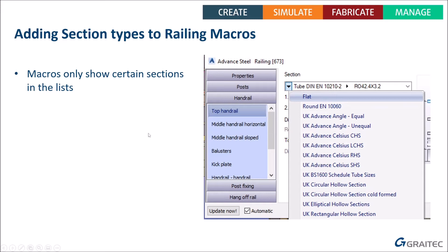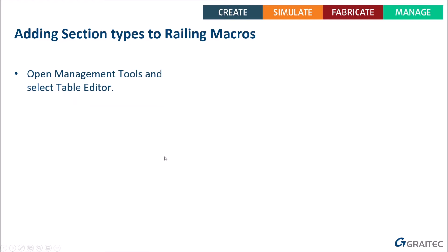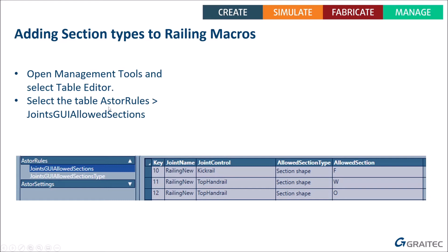Looking at the railing section list, half-rounds and similar sections are not in that list by default — this is all controlled by a database table. If you've done training with us, you'll know about the management tools, including the Table Editor. We usually advise not to edit tables or databases directly unless under guidance, because you can damage the system if you break entries in the wrong place. However, this is one case where you do need to go into the Table Editor. The relevant table is called 'Joints GUI Allowed Sections'.